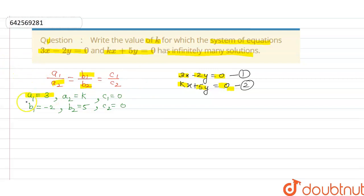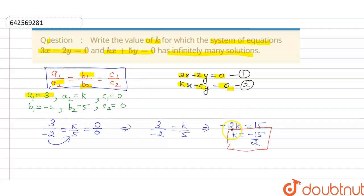When we put these values in our condition, we get 3 divided by k is equal to minus 2 divided by 5. By cross multiplication, we get 15 is equal to minus 2k, so the value of k is minus 15 by 2.